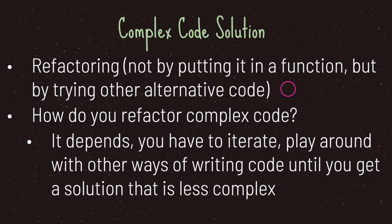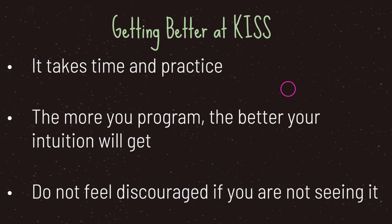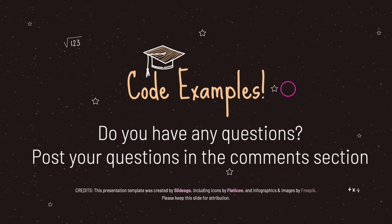Since you're a beginner, you'll find that trial by fire leads you to a solution. To get good at the KISS principle — given it's a vague principle — it takes time and practice. The more you program, the better your intuition will get. Don't feel discouraged if you're not seeing a better solution yet. Over time you'll say 'wow, this is really hard to read — how can I make this easier?' Now let's take a look at some code examples for both the DRY and KISS principles.